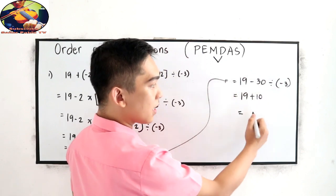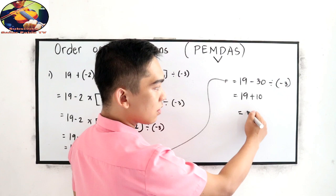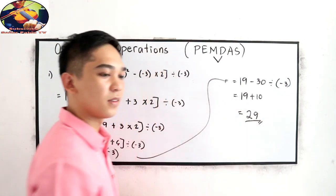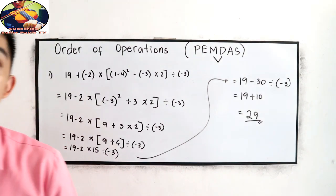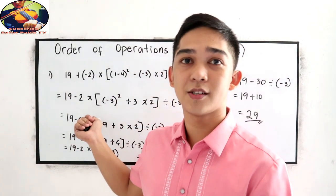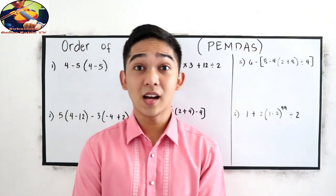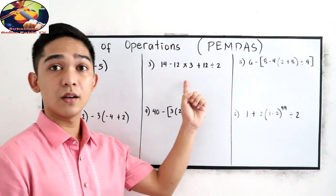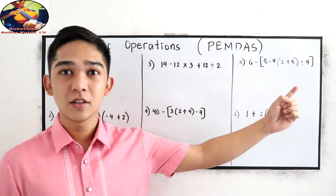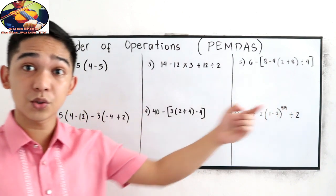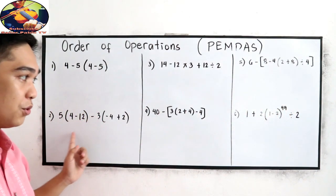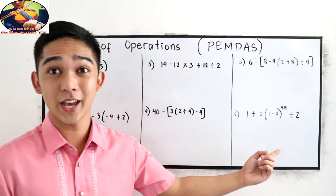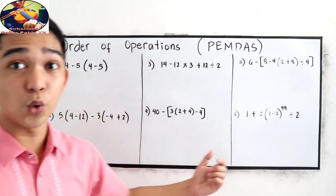So our final answer is 19 plus 10, which equals 29. That is the order of operations. I will now answer numbers 1, 3, and 5. After explaining, I want you to answer numbers 2, 4, and 6. Let's start with number 1.